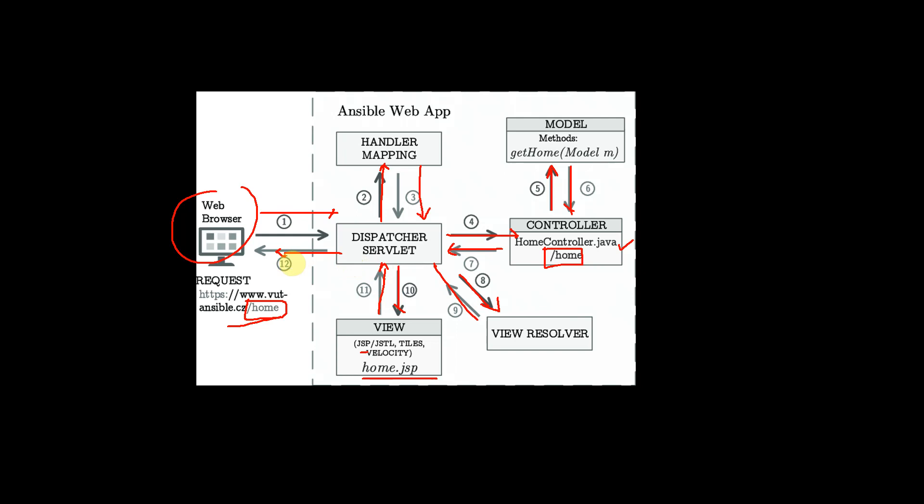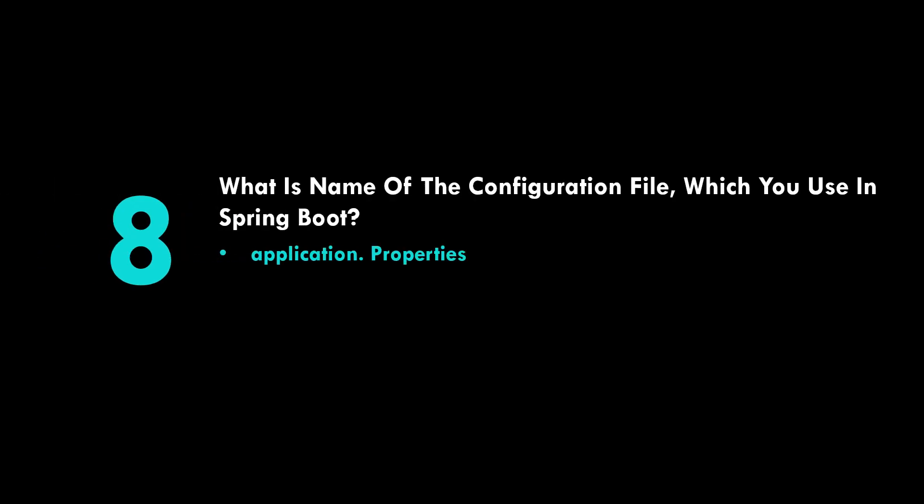The eighth question: what is the name of the configuration file used in Spring Boot? This is a basic but important question. The answer is application.properties — that is the configuration file where all configurations are done.